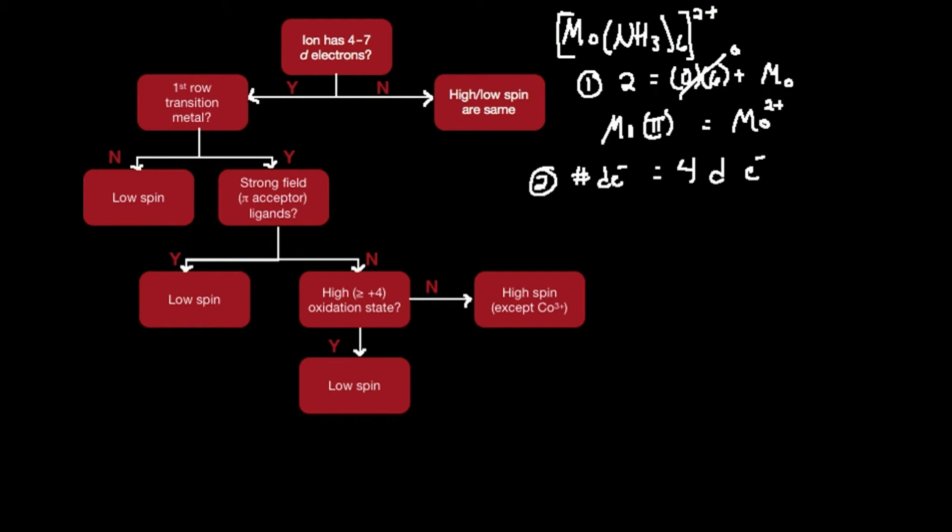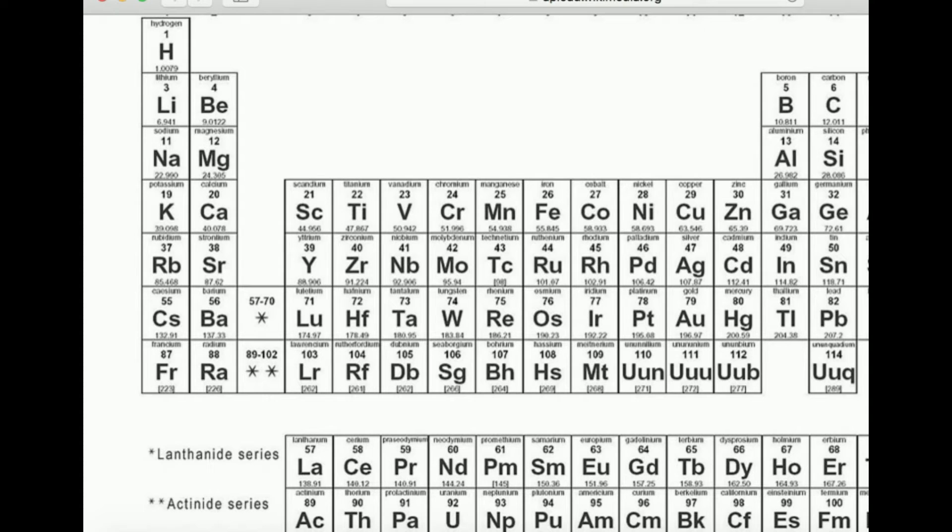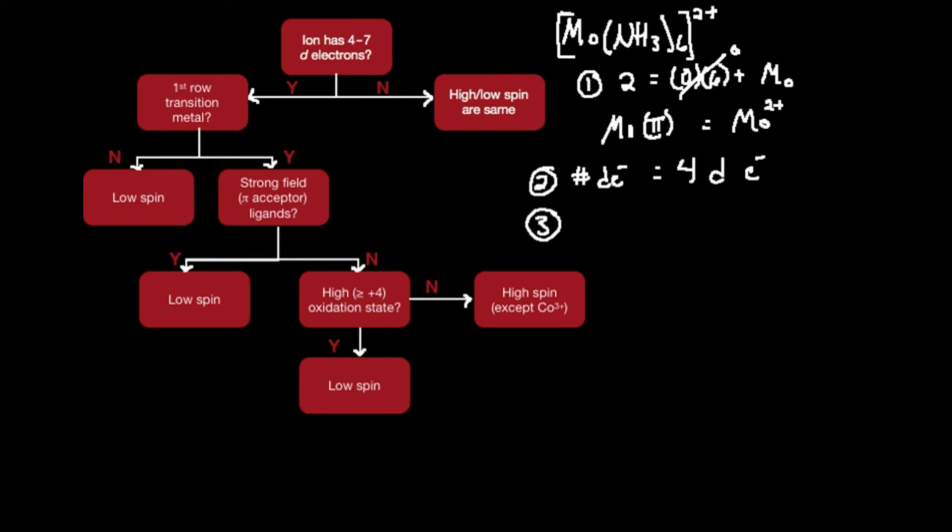Now I can go to this flowchart. I need to calculate whether it is low spin or high spin. Does the ion have 4 to 7 d electrons? Yes, it has 4. That's in that range so I go to yes. I need to ask myself, is it a first row transition metal? Molybdenum is in the second row. So the answer is no.